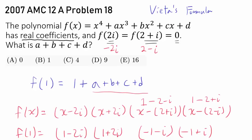So we know f(1) is 10. So we know 10 equals 1 plus a plus b plus c plus d. And immediately, that tells us that a plus b plus c plus d is 9, or our answer is D.